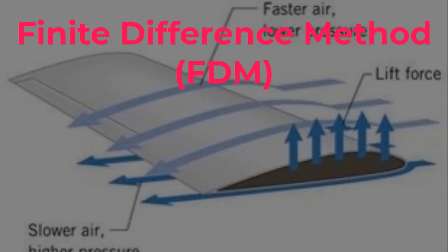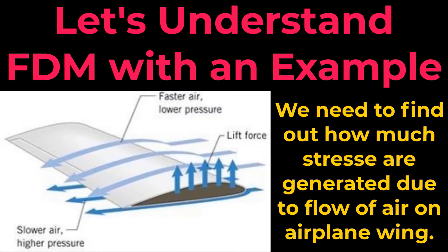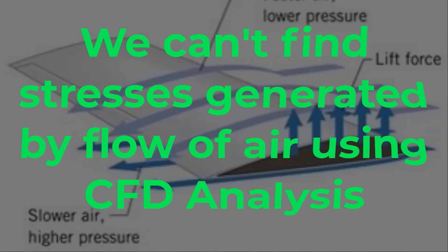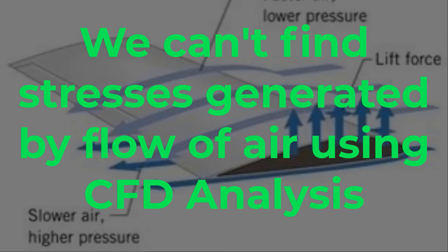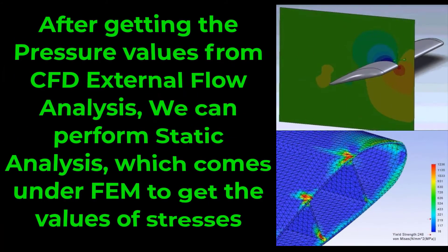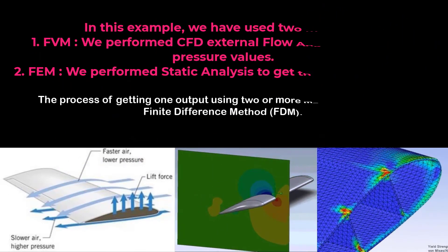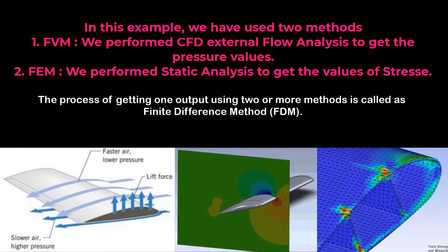The final method is the Finite Difference Method (FDM). When a CAE engineer employs two or more numerical methods to obtain a single output, it is known as using the Finite Difference Method. To understand FDM, let's consider an example where we need to determine the stresses generated due to the flow of air on an airplane wing. Stresses can't be found using the FVM method — in other words, CFD analysis can't be used directly to find stresses. However, we can determine the amount of pressure exerted by air on the airplane wing using CFD external flow analysis. Once the magnitude and location of the pressure are acquired using CFD analysis, we can then perform static analysis (part of Finite Element Analysis) to find the stresses. In this example, we utilized two methods — Finite Volume Method (FVM) and Finite Element Analysis (FEA) — to obtain the values of stresses due to the flow of air. This process of using two or more methods to achieve one output is referred to as the Finite Difference Method (FDM).